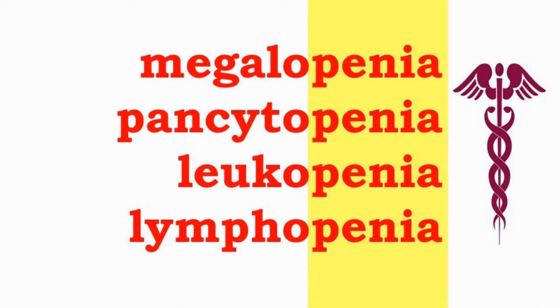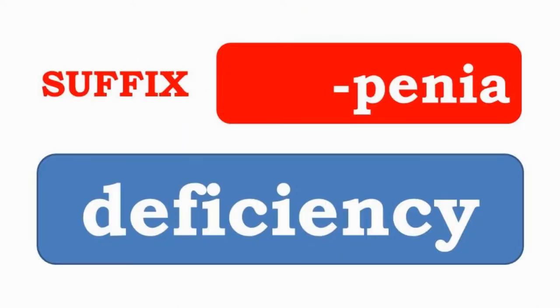Megalopenia, pancytopenia, leukopenia, and lymphopenia have the suffix -penia, which indicates a deficiency.